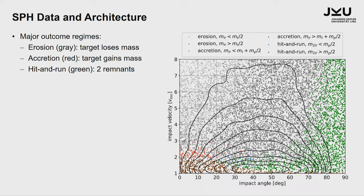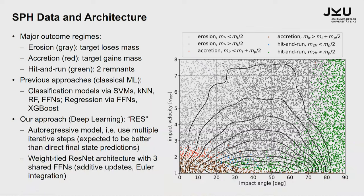In general there are three major outcome regimes. There can be erosion where the target loses mass — the projectile hits the target and takes away some mass, which is probably how our moon was created. Then there's accretion, meaning the target gains mass from the projectile. And in hit and run there are two remnants. It depends on the impact velocity, the impact angle, and the mass ratios on which regime you're in. Previous approaches in this community used classical machine learning algorithms like support vector machines, K-nearest neighbors, and random forests.